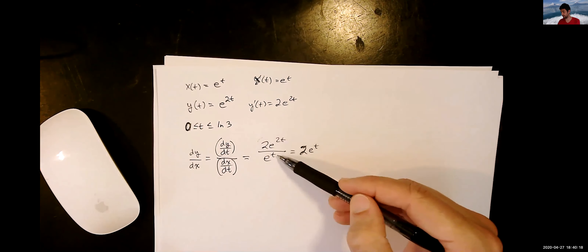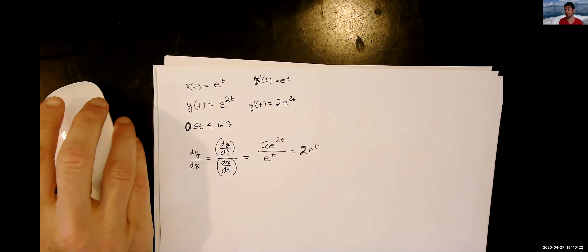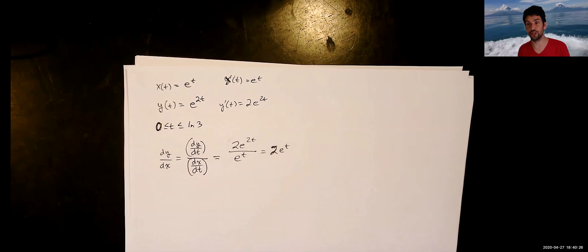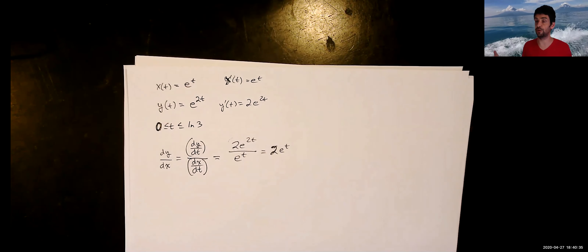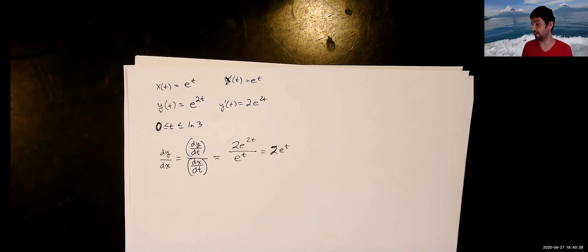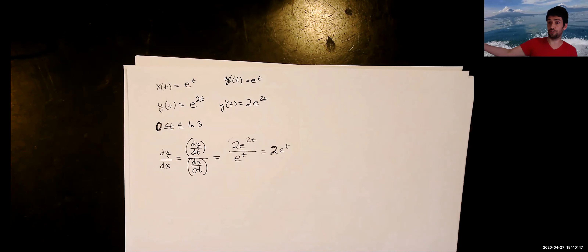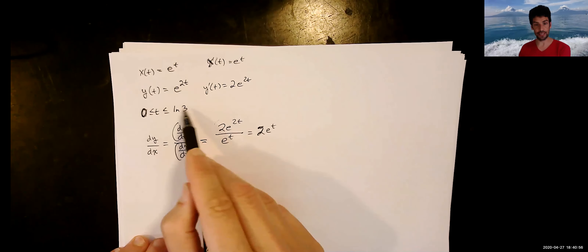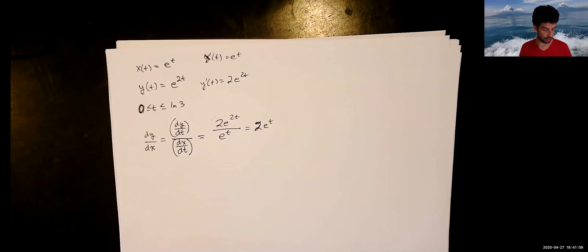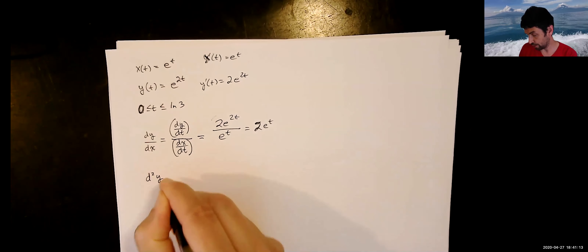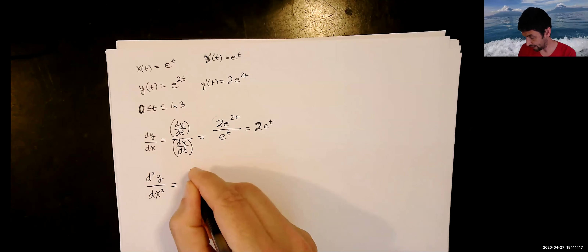What we're really doing is saying every time t changes by an increment, this is how y changes, and this is how x changes. If we compare how they each change for the same increment in t, we get a comparison of how they change relative to each other — just like knowing our speeds relative to time lets us compare them to each other. Notice dy/dx here is a function of t — this expression only has t in it.